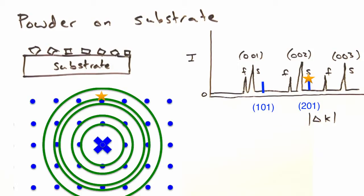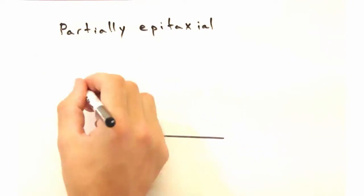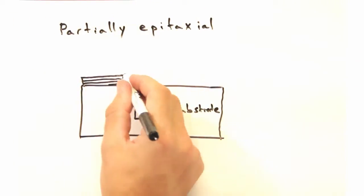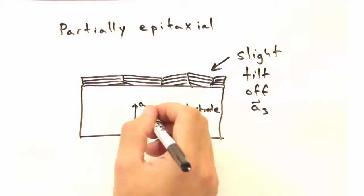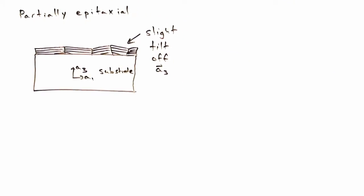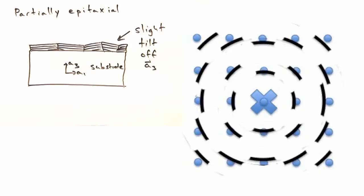In reality, a film that is only partially epitaxial will have some of the grains oriented correctly, and some of them will be slightly tilted. In that case, our reciprocal space would have the dots for the substrate lattice and short arcs for the thin film reciprocal lattice.